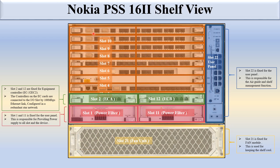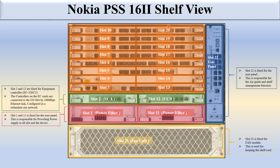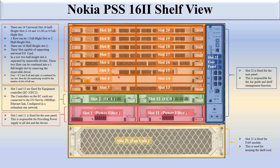Slots 3 to 10 and slot 13 to 20 are the 16 half-height slots used for the universal input/output cards. There are 16 universal half-height slots from slot 3 to 10 and slot 13 to 20, or you can say 8 full-height slots. If all slots are used as full slots, then the slot numbers will be from 3 to 10 only.